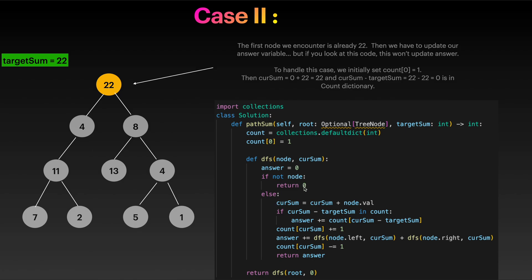If the node is None or null, we return 0. Otherwise, we update our current sum, and then we check if current sum minus target sum is in our dictionary. If it is, we increment our answer variable by how many times we have seen that value of current sum minus target sum so far.